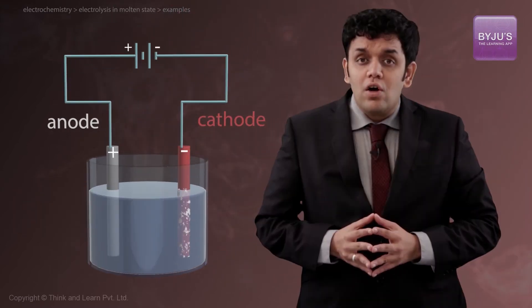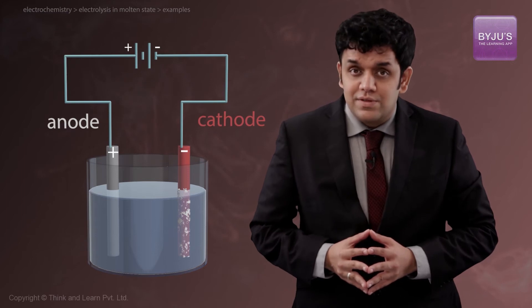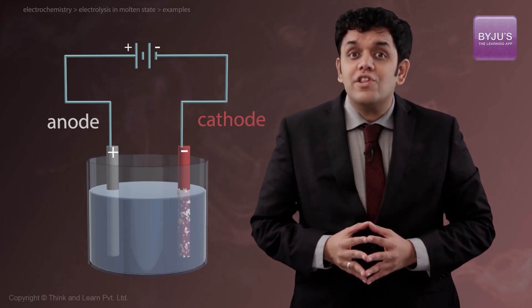Right now, we saw the electrolysis of molten salts. Over here, there is no other competing ion for oxidation or reduction. Let us now look at the reduction of salts in an aqueous solution. In this case, the only difference is going to be that water is also going to compete at both cathode as well as anode for oxidation and reduction.